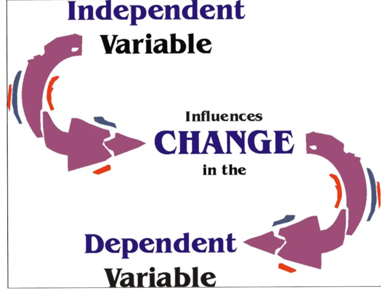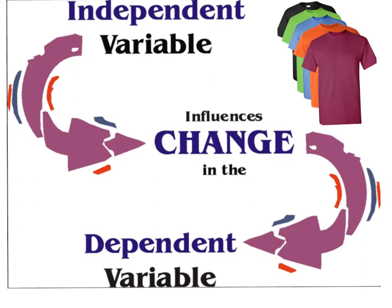If I have a whole host of shirts — all these different shirts up here — and they're all the same material, made by the same company, they all have the same basic shape. And I predict that the darker the shirt color is, the hotter I'll be on a sunny day when I wear the shirt. What variable do I believe is going to affect what other variable? There's one variable I believe — if I change that thing, this other thing will change.